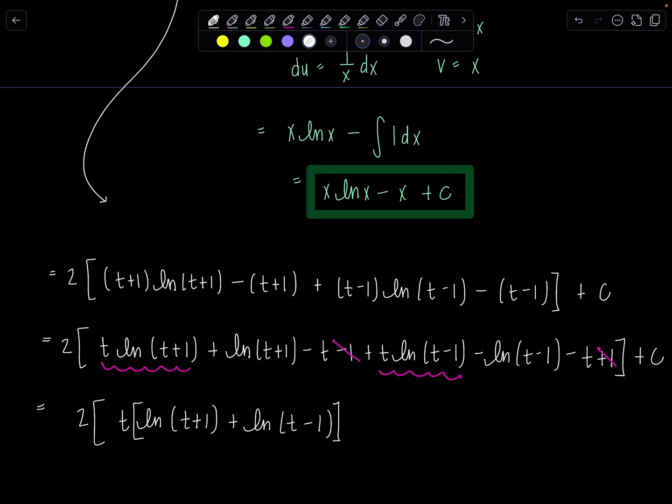Do you feel a log property coming soon? Yes, I do too. Also observe these two guys. I can just write them as a quotient of a single logarithm. So I'll have plus natural log t plus 1 over t minus 1. And then who was unaccounted for? Just the little minus t and another minus t. So minus 2t and then plus c.